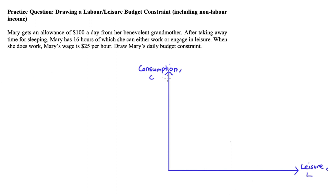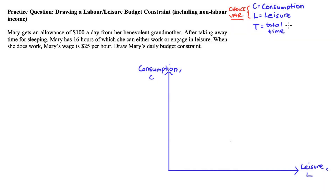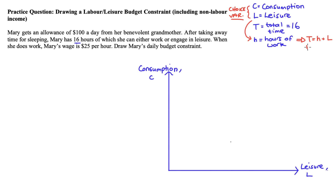Now we should define some notation. We have consumption C and big L for leisure — those are our two choice variables, that's what Mary is choosing between. We also write down big T, which is the total amount of time in the day that Mary has to either work or engage in leisure, so that's 16 for Mary. I'll also put little h, which is the number of hours engaged in paid work. This variable is defined by L: when Mary chooses L, she essentially chooses H as well. Formally, T equals H plus L, and that means H equals T minus L.